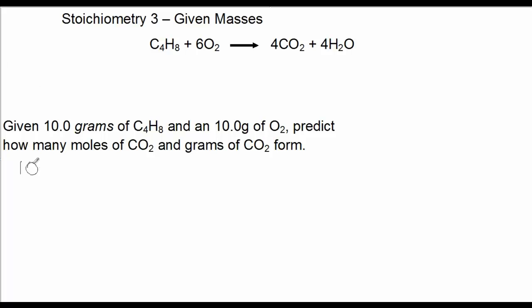So, first thing we want to do is convert both of these quantities to moles. So, 10 grams of C4H8 converted to moles. We use the reciprocal of the molar mass of C4H8, which in this case is going to be 1 mole over 56 grams. And 10 divided by 56 is 0.179 moles of C4H8. So, put that up here, 0.179.